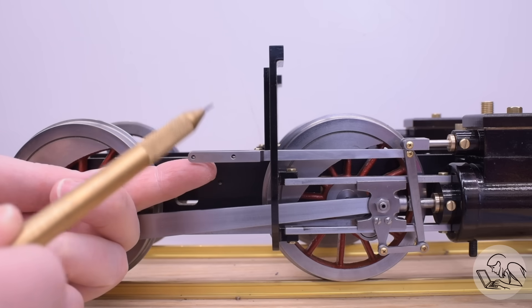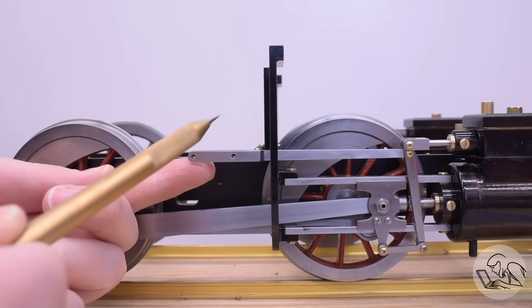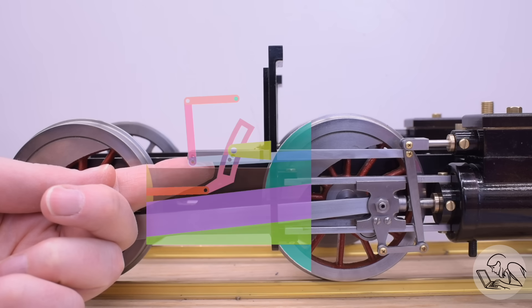I'm going to get started on the expansion link assembly, which is a large curved slotted link that goes in this area, attaches to the motion bracket. And this assembly is really the brains of Walschaert's. If you watched my Walschaert's video, then you know how this link works and how important it is.